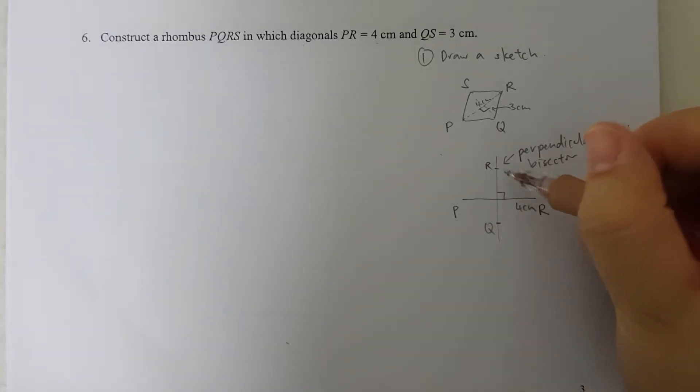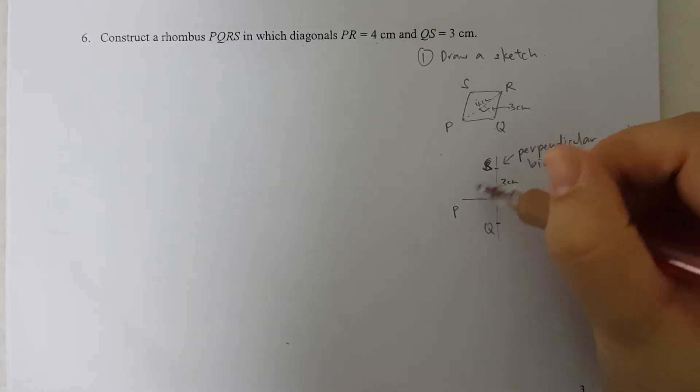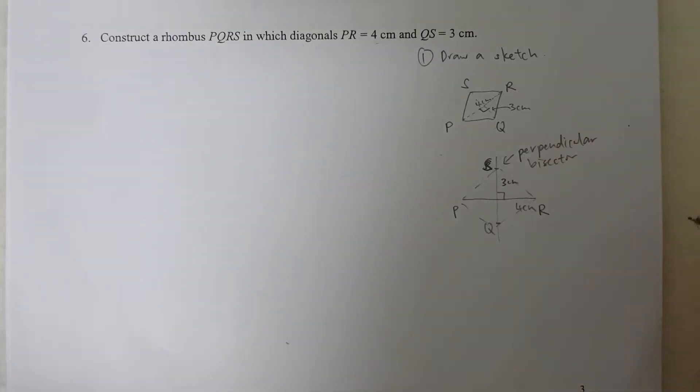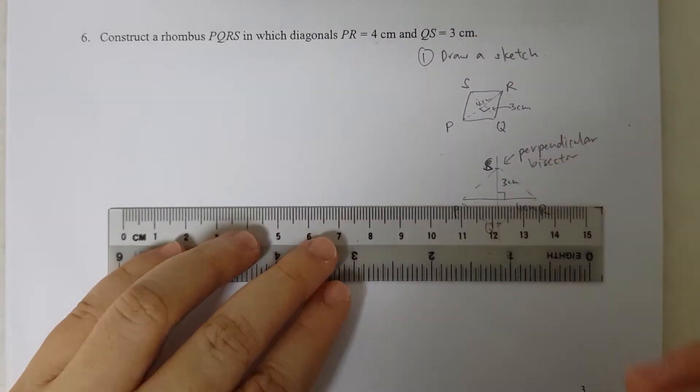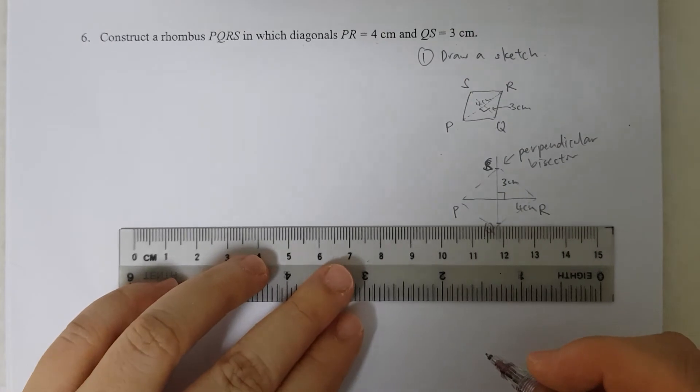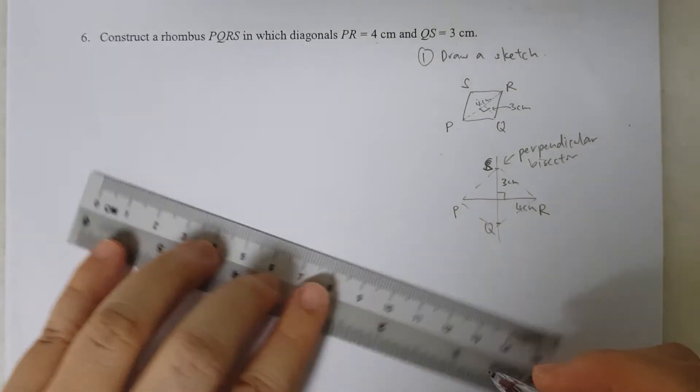So PR is 4 cm, QS is 3 cm, and I'll be able to form my rhombus. I'm going to start by taking my ruler and I am going to draw PR equals to 4 cm.